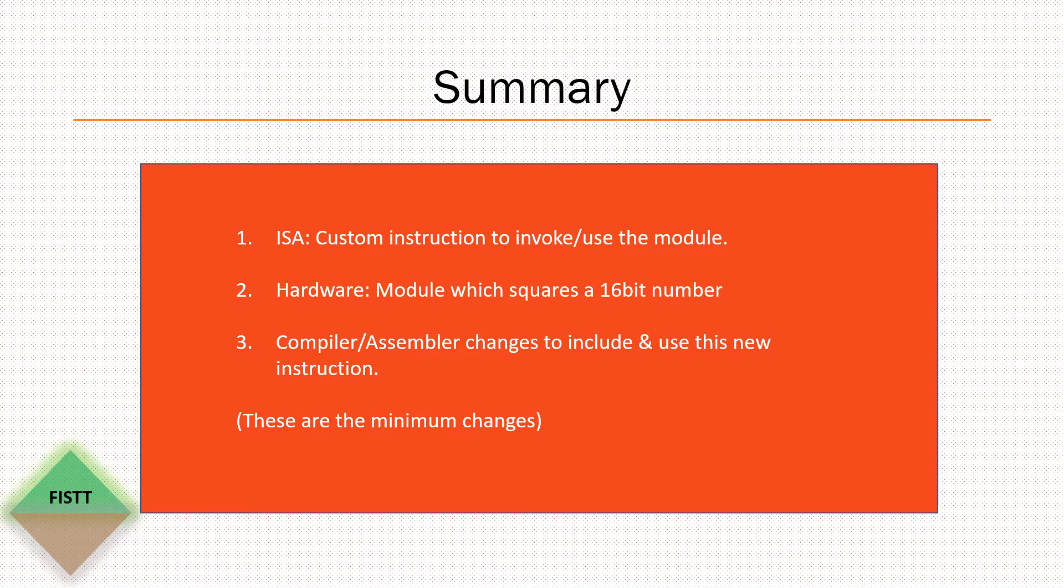So to summarize, these are the minimum changes. What we discussed now is we introduced our own instruction and we introduced our own hardware like the square module. And then there has to be changes across the compiler and assembler for customizing the RISC-V core. Thank you.